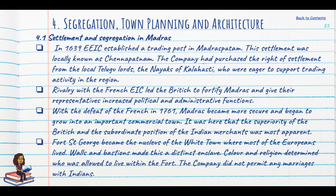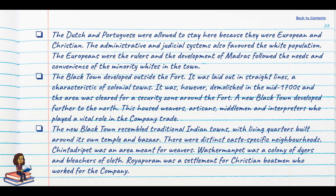Once the French were defeated in 1761, Madras became more secure and grew into an important commercial town. Fort St. George became the nucleus of the White Town where most Europeans lived — walls and bastions made it a distinct enclave. Colour and religion determined who was allowed to live in the fort; the Dutch and the Portuguese were allowed to stay as they were European and Christian and not serious competitors of the British East India Company. The administrative and judicial systems also favoured white Christian settlers.